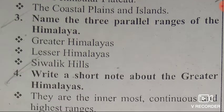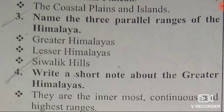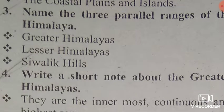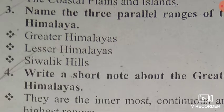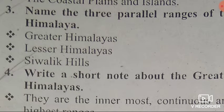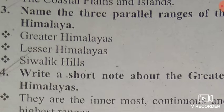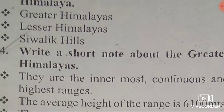Third question: Name the three parallel ranges of the Himalayas. The three parallel ranges are: one is the Greater Himalayas, second is the Lesser Himalayas, and third is the Shivalik Hills.